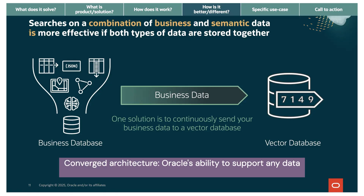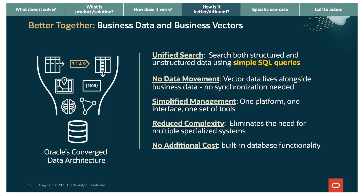What if you didn't have to choose? That's where Oracle's converged architecture changes everything. Instead of sending business data to a vector database, Oracle brings vector capabilities to your business data — fundamentally different. One database: business data and vectors together, no synchronization, no data movement, just simple SQL. Unified search, no data movement, simplified management, reduced complexity, and no additional cost for additional systems to license or maintain.